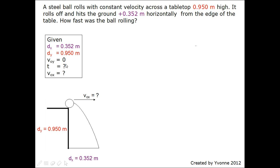So the question asks, how fast was the ball rolling? Therefore, we are looking for the time and the initial horizontal velocity. We used the equation dy equals v₀y times t plus ½ times a times t squared.